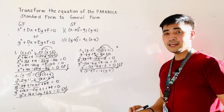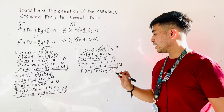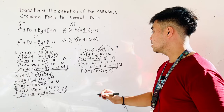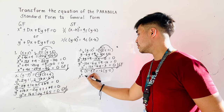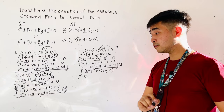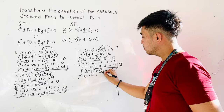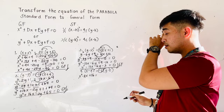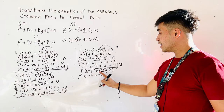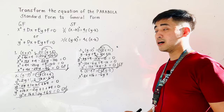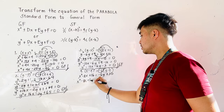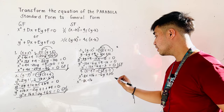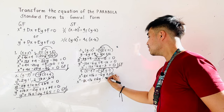For the last example, we are given x minus 4 quantity squared is equal to negative 6 times the quantity y minus 5. Again, let us expand. x minus 4 quantity squared is equal to x times x, which is x squared. Negative 4 times 2 is negative 8 times x, that is negative 8x. Negative 4 times negative 4 will result to positive 16. Then distribute negative 6 to the group: that becomes negative 6y. Negative 6 times negative 5, negative times negative becomes plus, and 6 times 5 is 30. Transfer negative 6y to the other side — that becomes plus 6y. Positive 30 becomes negative 30, is now equal to 0.